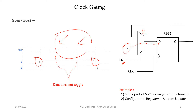These two clock cycles are basically getting wasted with respect to flip-flop behavior because they are not going to make any change in the flip-flop output. The example could be some part of the SOC which is not always functioning, or some configuration registers where we do not need to update configurations frequently. So if these kinds of circuits are present in our design, we definitely have clock cycles where the circuit behavior is not changing — those clock cycles are basically getting wasted.